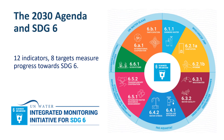The United Nations supports countries to monitor water and sanitation related issues within the framework of the 2030 Agenda for Sustainable Development, or SDGs. This effort is coordinated by UN Water through the Integrated Monitoring Initiative for SDG 6, also known as IMI SDG 6.